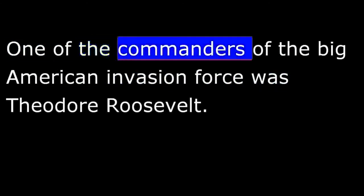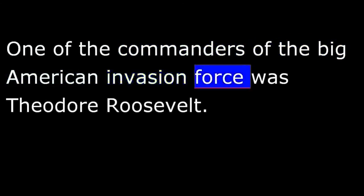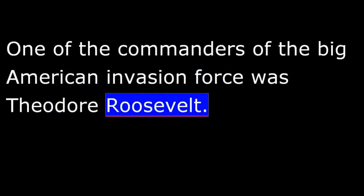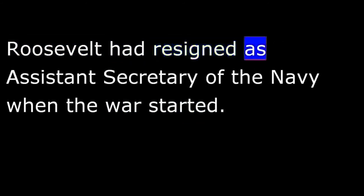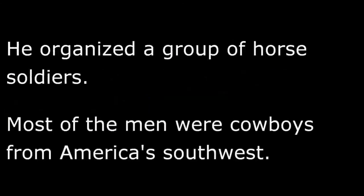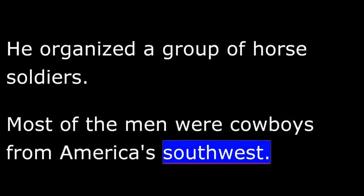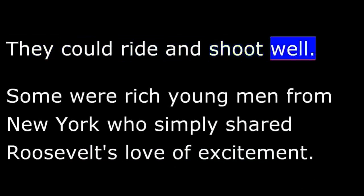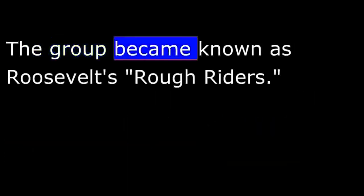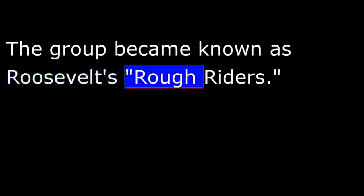One of the commanders of the big American invasion force was Theodore Roosevelt. Roosevelt had resigned as assistant secretary of the Navy when the war started. He organized a group of horse soldiers. Most of the men were cowboys from America's southwest who could ride and shoot well. Some were rich young men from New York who simply shared Roosevelt's love of excitement. The group became known as Roosevelt's Rough Riders.